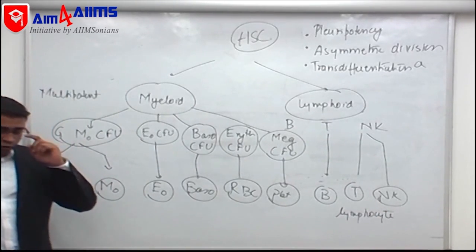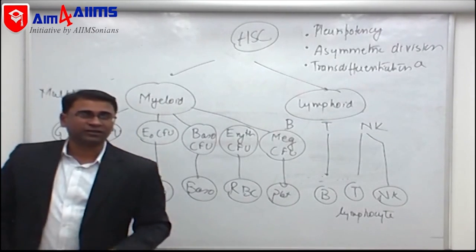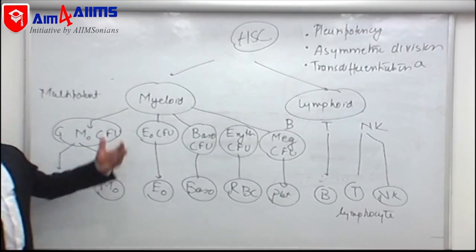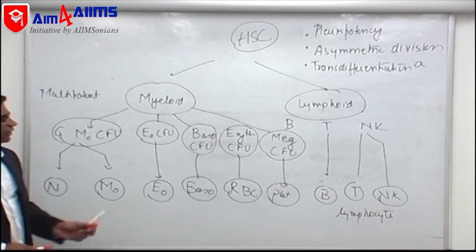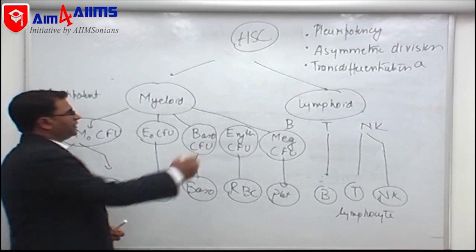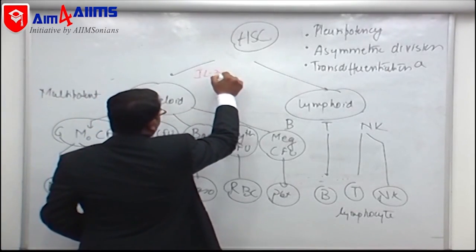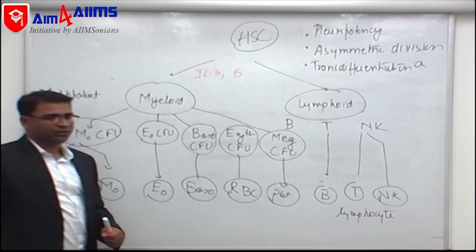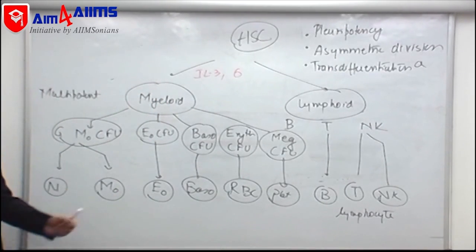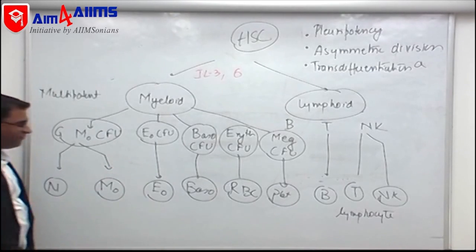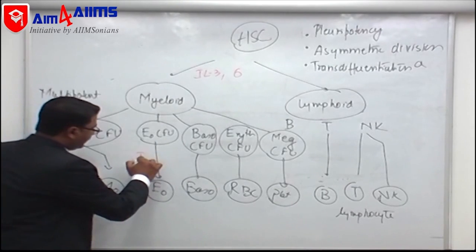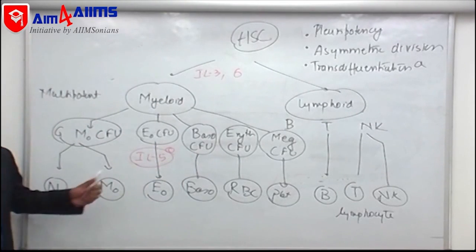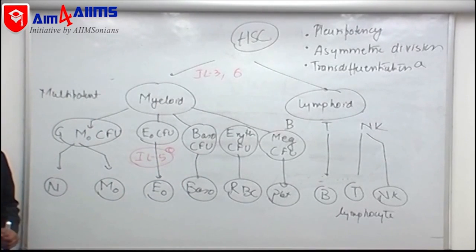We must also know the important growth factors and interleukins helping hematopoiesis. There are two key interleukins: interleukin-3 and interleukin-6, which help in hematopoiesis. Eosinophilic development is specifically helped by interleukin-5. This is a very important and frequently repeated MCQ.